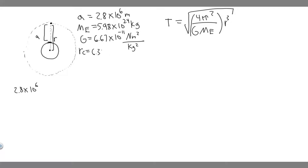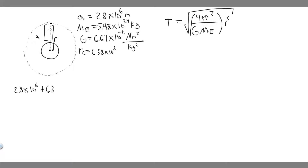So we want to add the altitude — 2.8 times 10 to the 6 — to the radius of the Earth — 6.38 times 10 to the 6. When you add these two numbers, you get 9,180,000 meters. So the orbital radius R equals 9,180,000 meters.